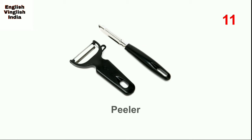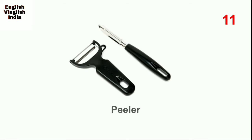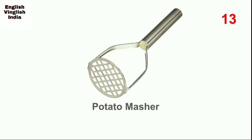Next, peeler. A peeler is used to remove the outer layer — the skin or peel — of some vegetables such as potatoes and carrots, and fruits such as apples and pears. Next, kitchen scissors. They are used for cutting and trimming foods such as cabbage, herbs, and green beans.